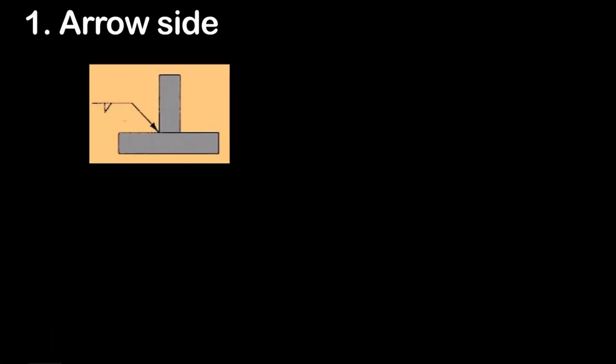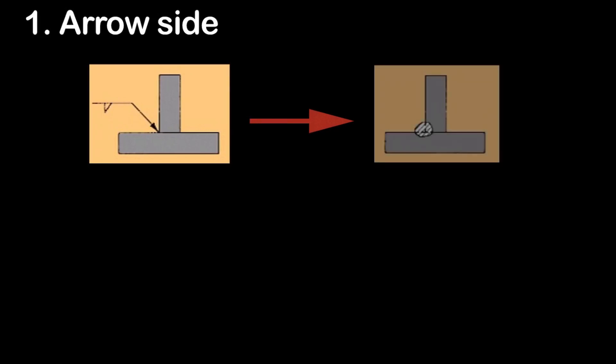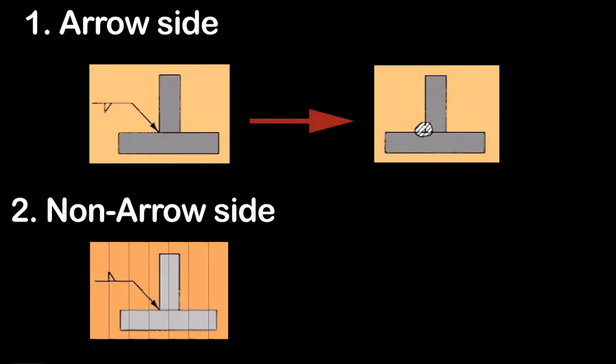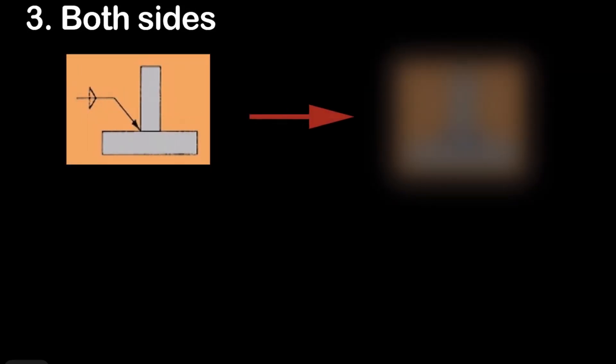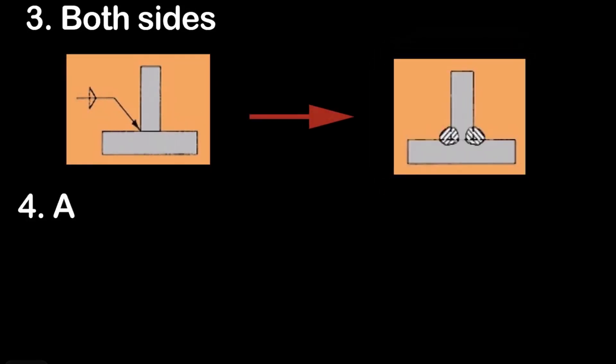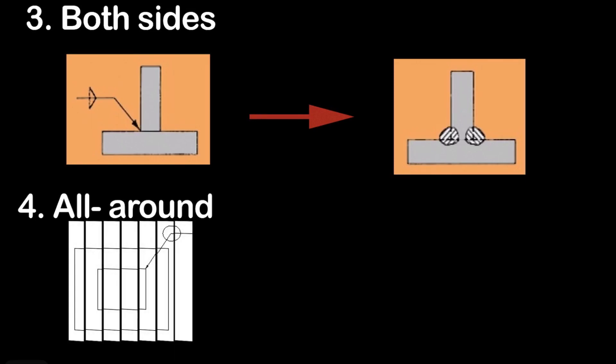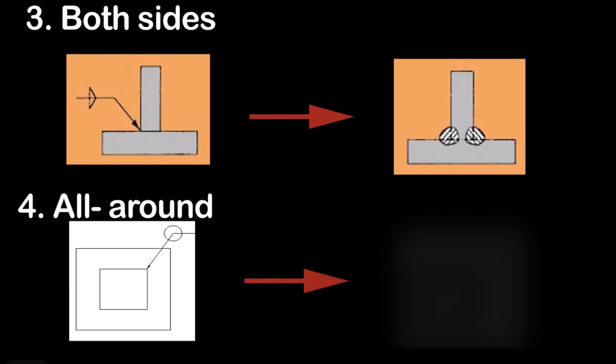If weld symbol is below the reference line, welding is to be carried out at arrow side. If weld symbol is above the reference line, welding is to be carried out at non-arrow side. If welding symbol is on both sides of the reference line, the welding is to be carried out at both sides. If circle is placed at the intersection of arrow and the reference line, the welding is to be carried out all around.